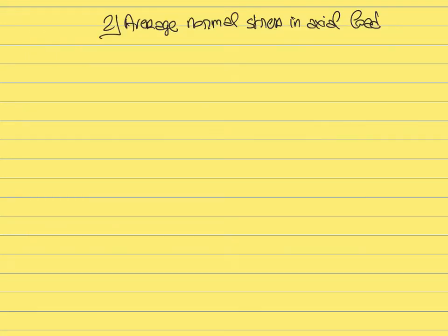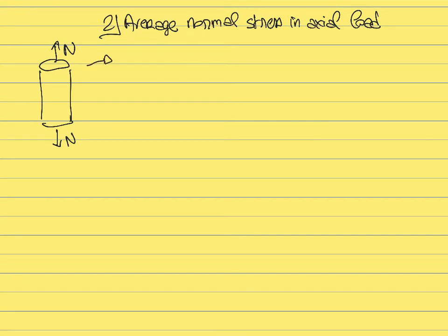The first case we are going to consider is the average normal stress that develops in a member subjected to an axial load. For this, let's consider a cylinder subjected to a normal axial load that is orthogonal to the direction of the member. We are going to simplify by assuming that this member is homogeneous and isotropic.